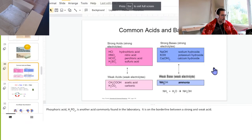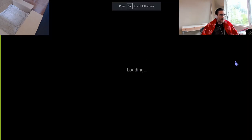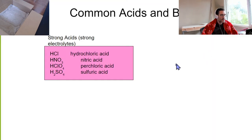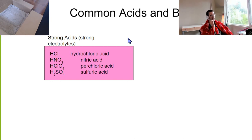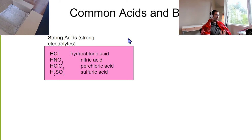We kind of left off here last time. We were talking about acids and bases. So here are some common acids and bases. We have these four, and we call these strong acids.